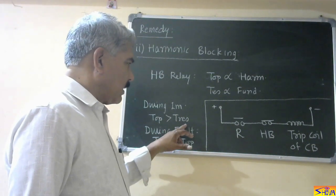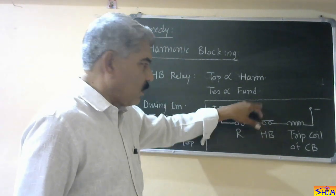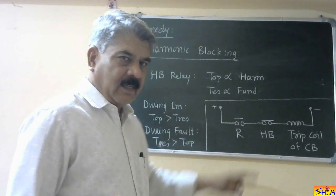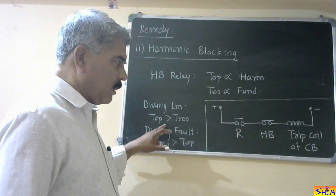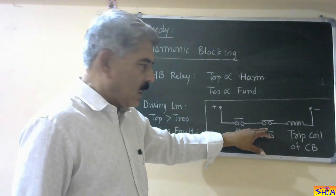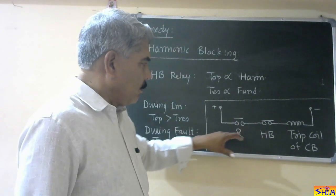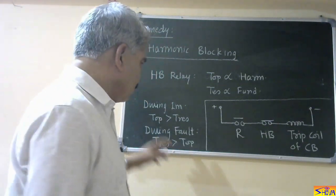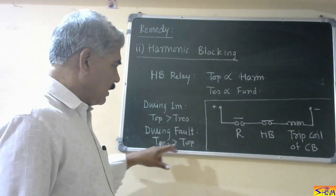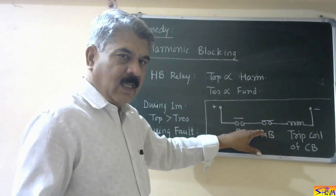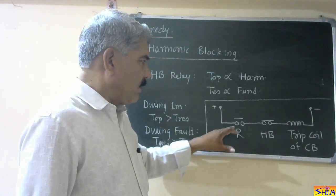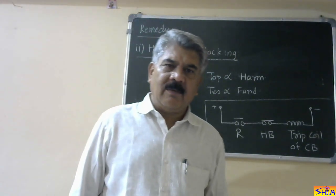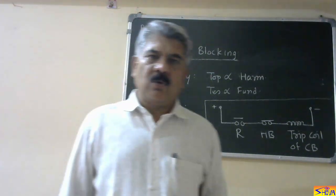During magnetizing inrush current, the harmonic blocking relay's operating torque exceeds its restraining torque, so it operates and opens its normally closed contact. Even when the main relay operates due to inrush current and closes its contact, the harmonic blocking relay contact is open, so the trip coil of the circuit breaker is not energized. During a fault condition, for the harmonic blocking relay the restraining torque is more than the operating torque, so it remains in its normal state with contact closed. The main relay operates, its contact closes, and since the harmonic blocking relay contact is also closed, the trip coil is energized and the circuit breaker trips. These are two methods for avoiding mal-operation of the differential relay due to magnetizing inrush current.